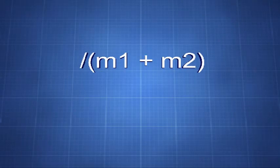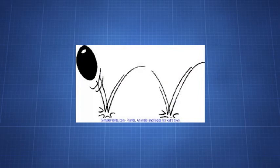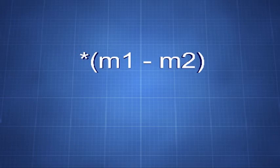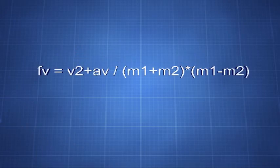That this term, division by m1 plus m2, obviously divides or cuts down the final velocity. Seeing that an elastic collision, in the true physical sense of the word of the masses, it is then operationally logical to think that the elasticity is determined by a term that is the inverse of the division by the sum of the masses, or that it's a multiplication of the subtraction of the masses. So our equation is now v2 plus av divided by m1 plus m2 times m1 minus m2.